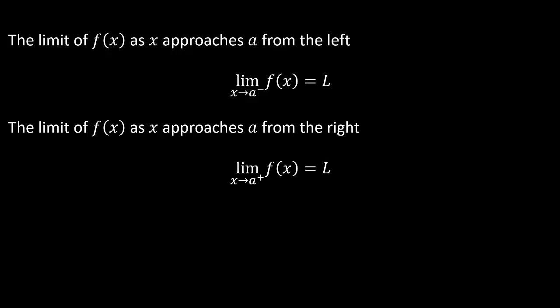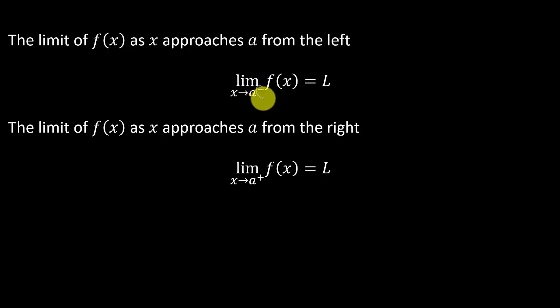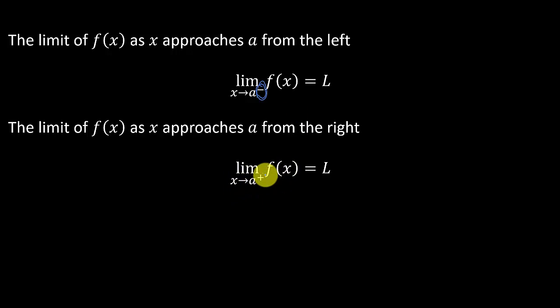So the limit of f of x as x approaches a from the left — the way we write that is the limit of f of x as x approaches a, and then there's a little minus sign there, which means we're approaching a from the left. And then if we're taking the limit of f of x as x approaches a from the right, there's a plus sign there.